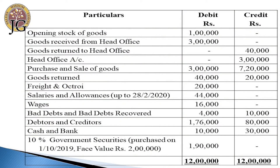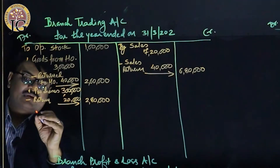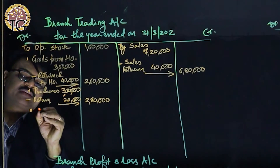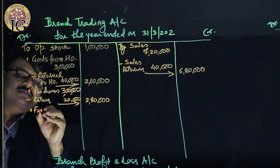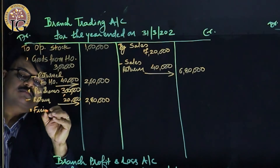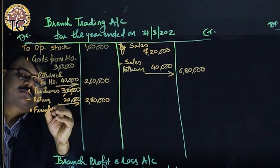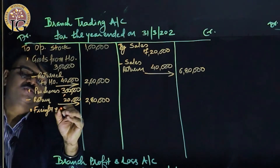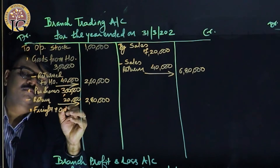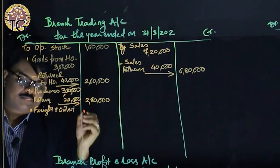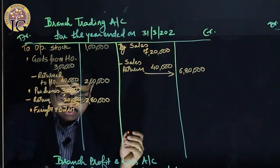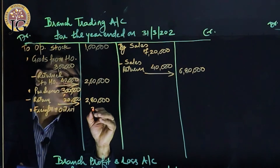Freight and octroi is a purchase expense, so it will be debited to the trading account. The amount is ₹20,000.